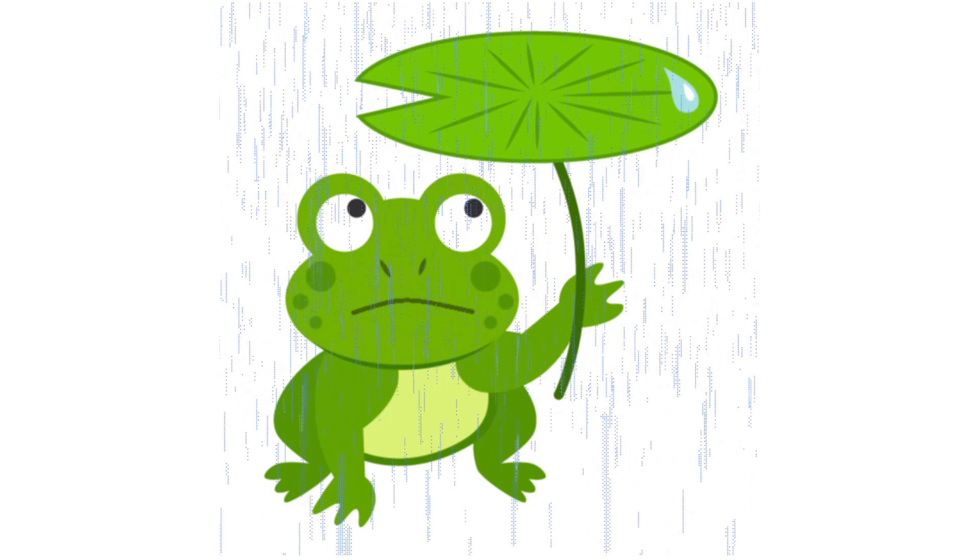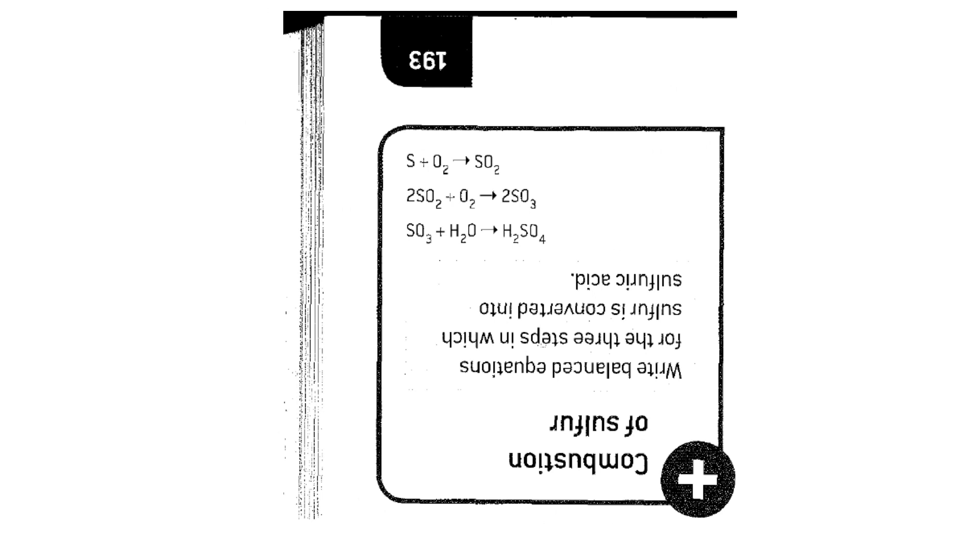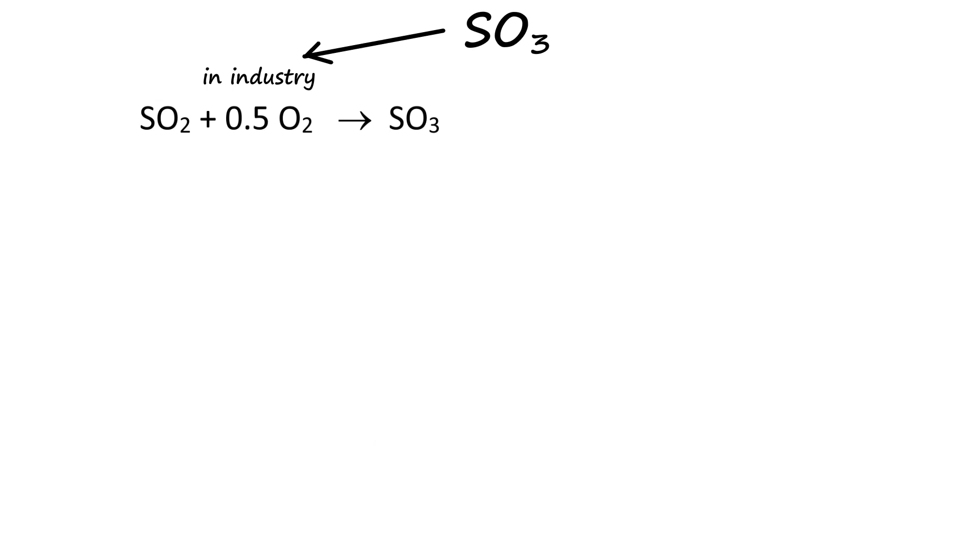When you burn fossil fuels with sulfur, you also produce sulfur dioxide. Then we're only a few steps away from acid rain. On page 193 there is a question: write balanced equations for the three steps in which sulfur is converted to sulfuric acid. Notice that the first step is oxidation to sulfur dioxide and the next step is oxidation to sulfur trioxide. These are two separate steps.